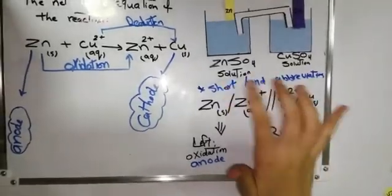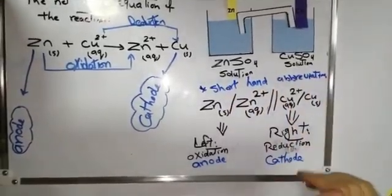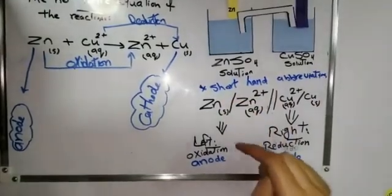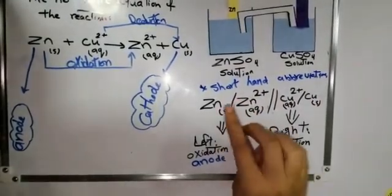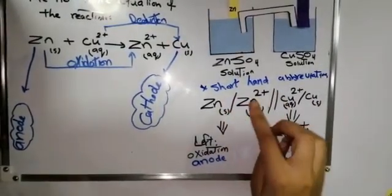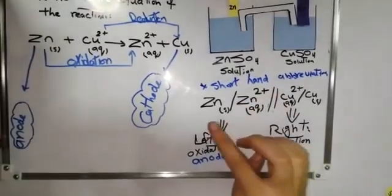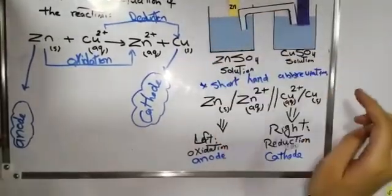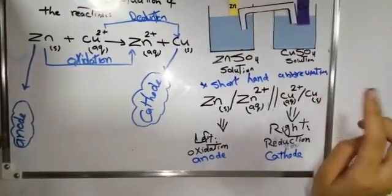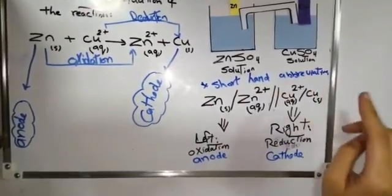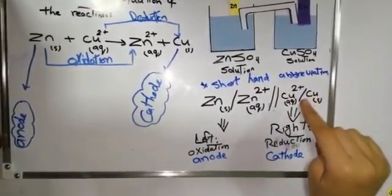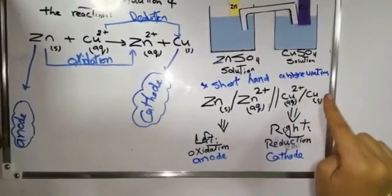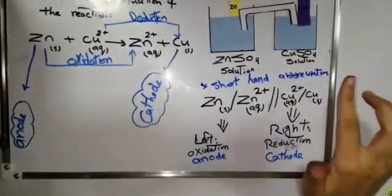We can see short hand abbreviation of our reaction. The left part shows an oxidation half reaction. That zinc loses two electrons and turns zinc positive 2, and this occurs on anode. And the right side shows reduction half reaction, that copper positive 2 changes to copper metal, which occurs in the cathode.